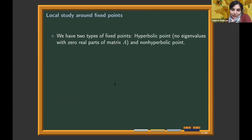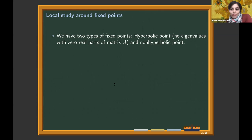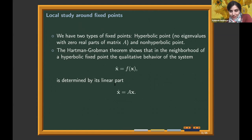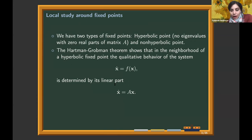We classify fixed points into two types: hyperbolic and non-hyperbolic. For the hyperbolic fixed point, the eigenvalues have no zero real parts. For the hyperbolic fixed point the problem is solved because you can use the Hartman-Grobman theorem to study the qualitative behavior of the system using just the linear part x-dot equals Ax — you can get rid of all higher order terms.